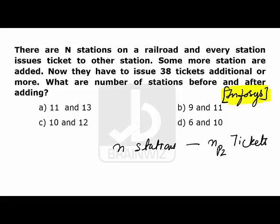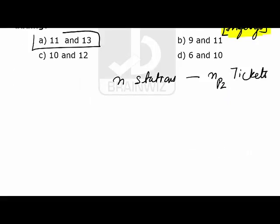Let's try the first option, which says 11 and 13. So 11 stations before adding and 13 stations after adding. If there are 11 stations, the number of tickets you have to issue is 11P2, which is 110. In the same fashion after adding, if there are 13 stations, then the number of tickets you want is 13P2.